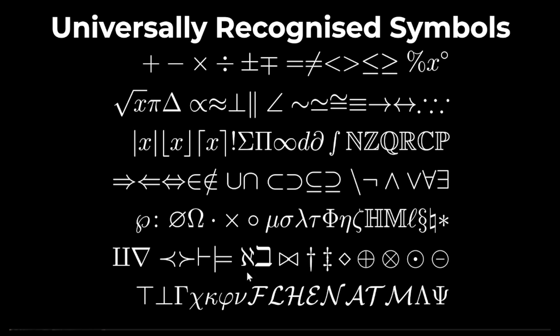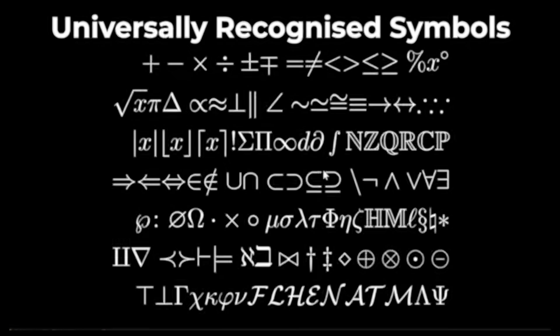There are about 116 universally recognized mathematical symbols and I'm going to explain every one of them.